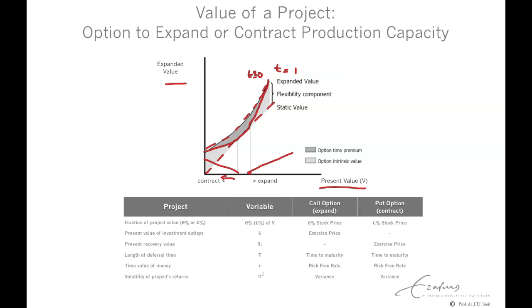To summarize, we have the static project value, an option to expand of 50%, an option to contract at 50%. The length of deferral time is the time to maturity of both options, the time value of money is the risk-free rate, and we have the volatility in the returns of the project value.